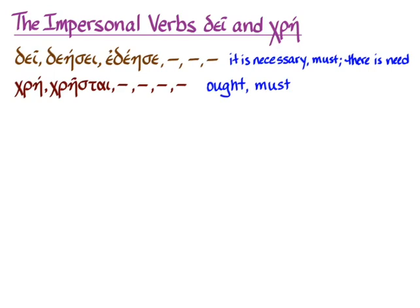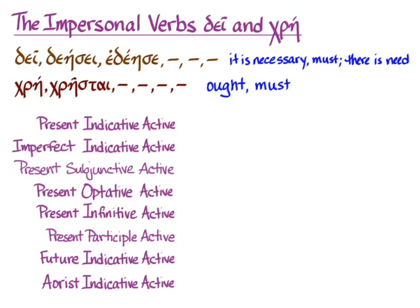When we learn how to conjugate these verbs, we're really only doing third person singular in the moods and the tenses. I'm going to show you first how to form these two verbs in the moods and tenses in which they appear, and then we'll talk about how to use them.